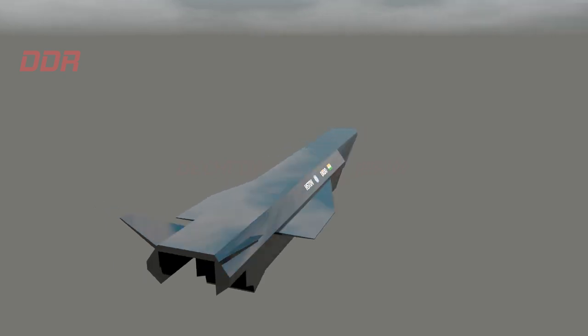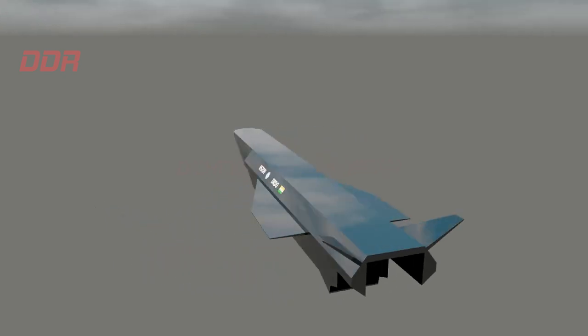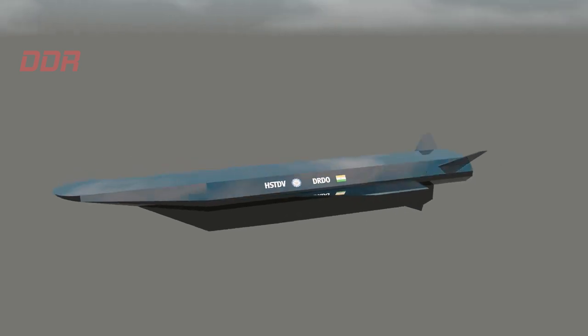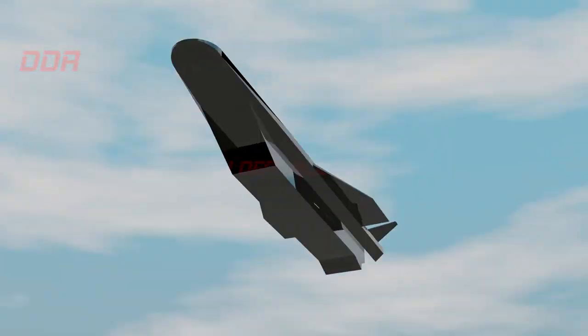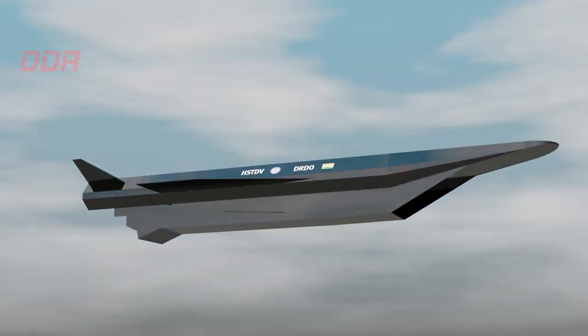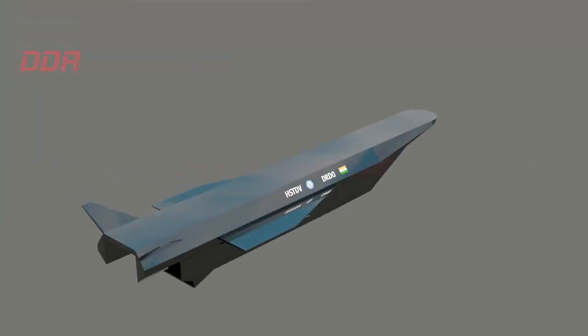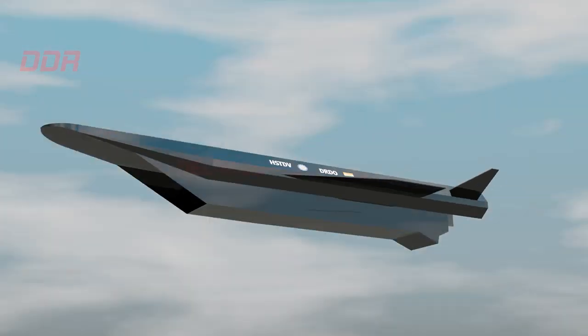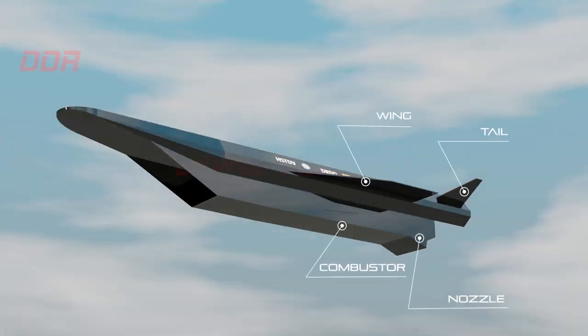Flow field data for a complete scramjet engine is lacking in literature for obvious reasons. The pressure data at wall surfaces of the engine could be experimentally obtained through piezoelectric transducers. However, figuring out the detailed flow structures such as boundary layers, separation, vortices, shear layers, etc. through experiments is extremely difficult.